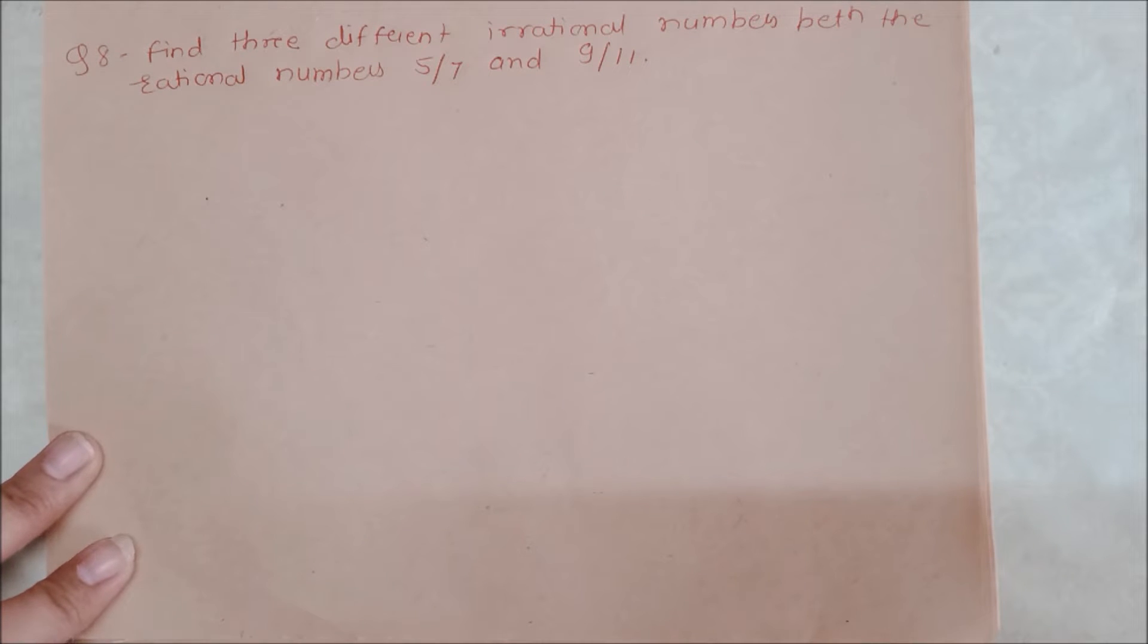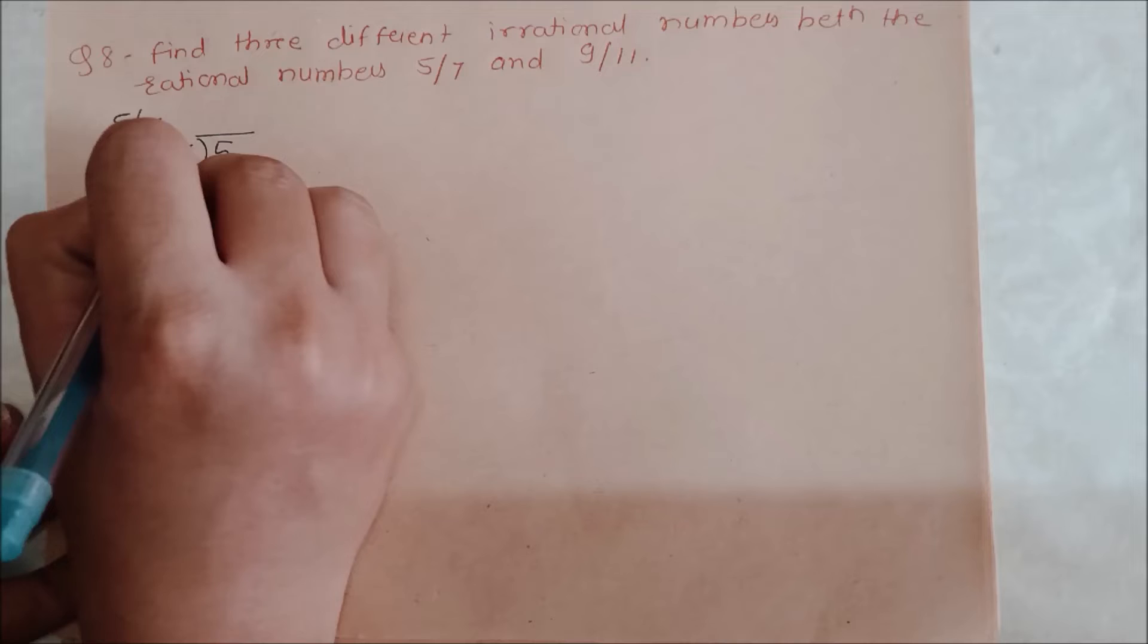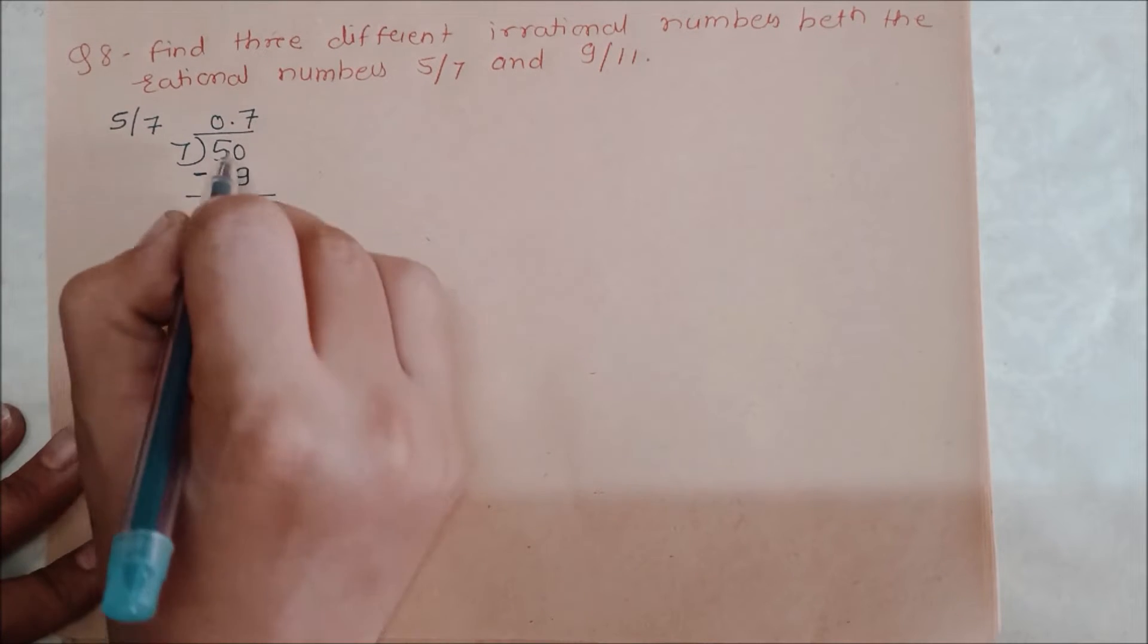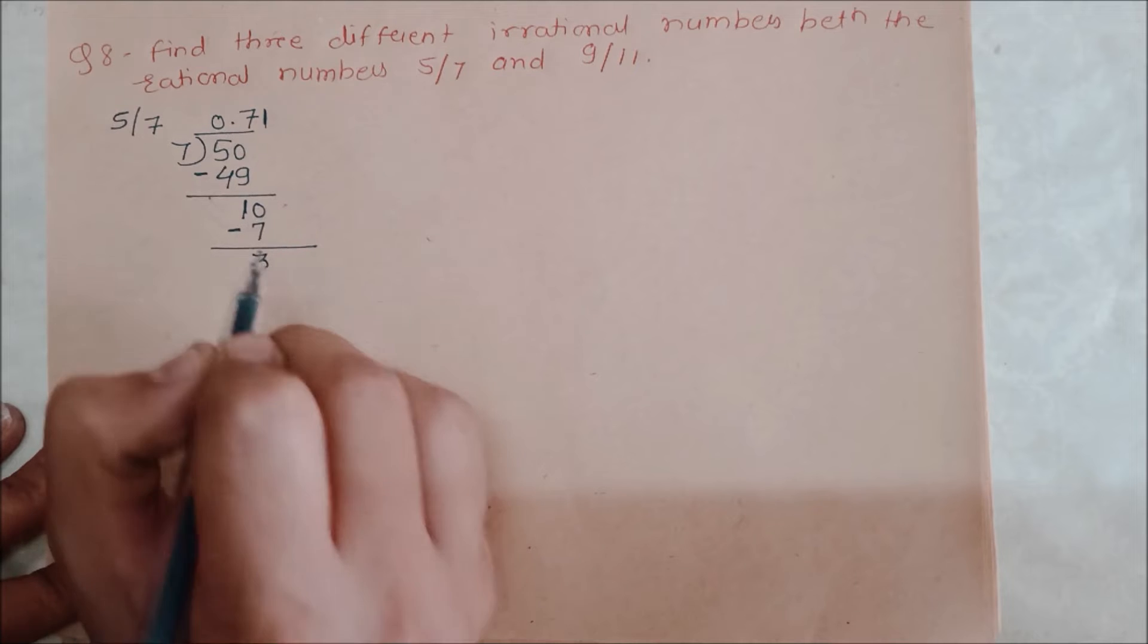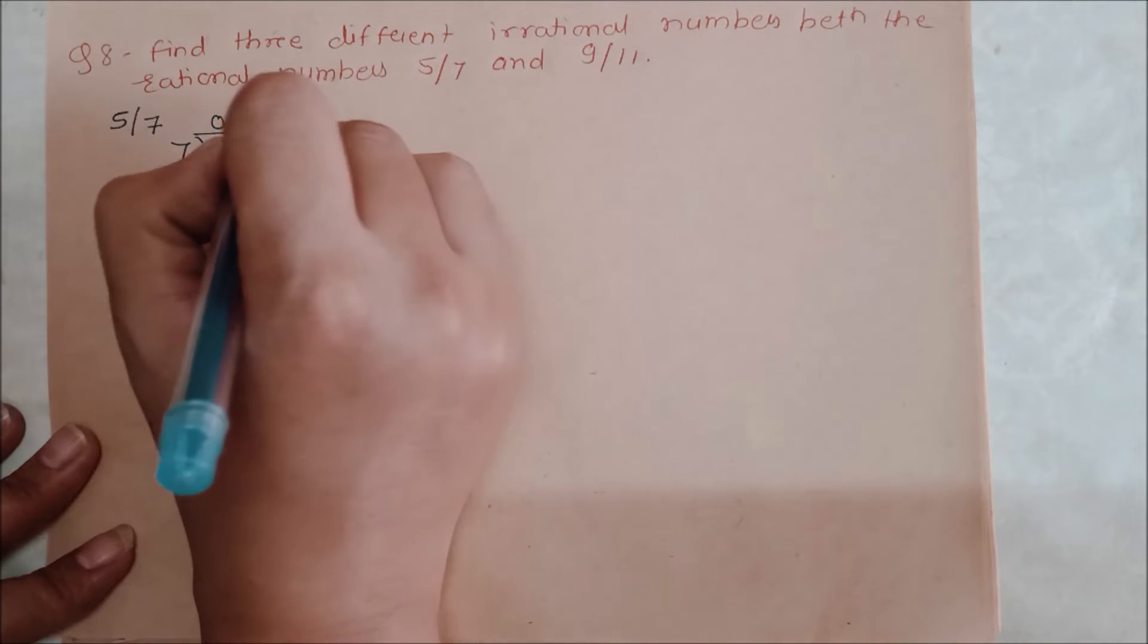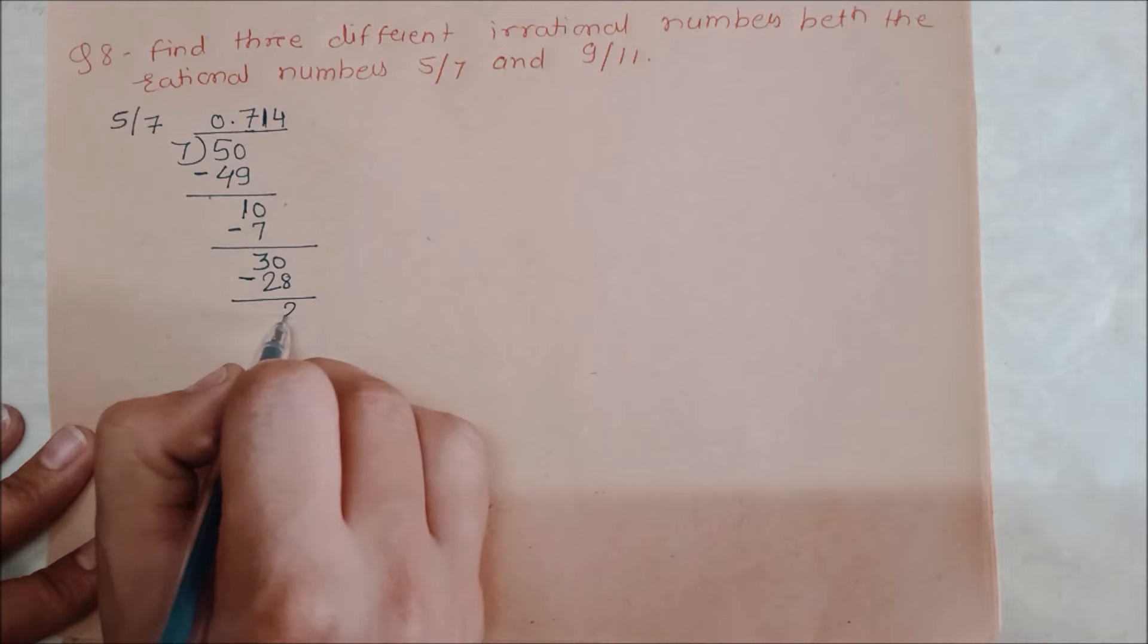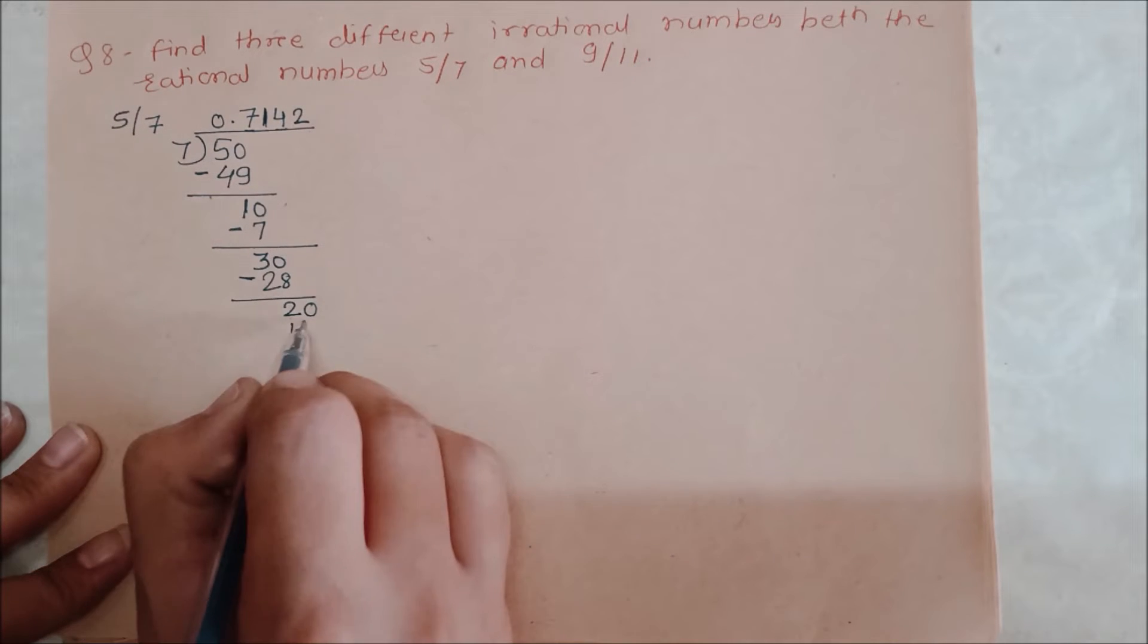We need to write those numbers below. So 5 upon 7, we divide this, means 5 divided by 7. We need to divide this, so we have 0 point. 7 times 7 is 49, 50 minus 49 is 1, bring down 0. 7 times 1 is 7, 10 minus 7 is 3, bring down 0. 30 minus 28 is 2, bring down 0. 7 times 2 is 14. Because 7 times 3 is 21, which will be more than 14, minus 6.